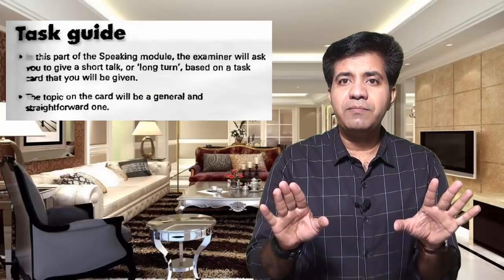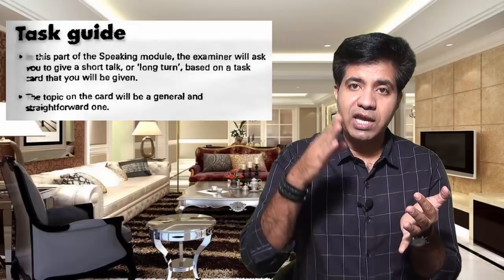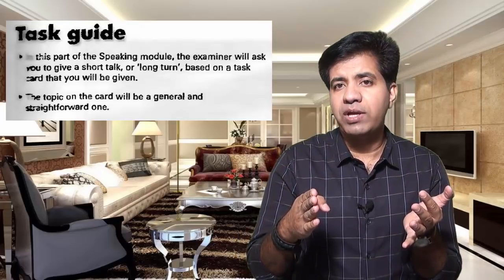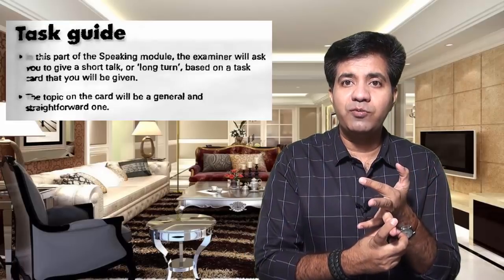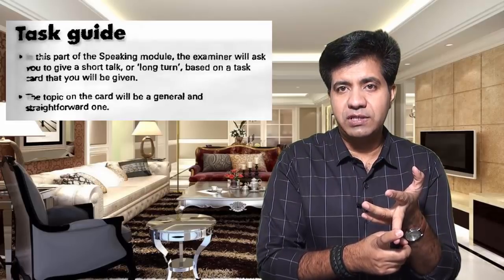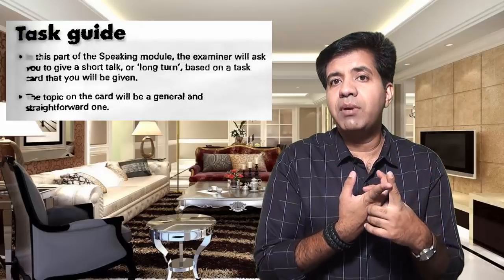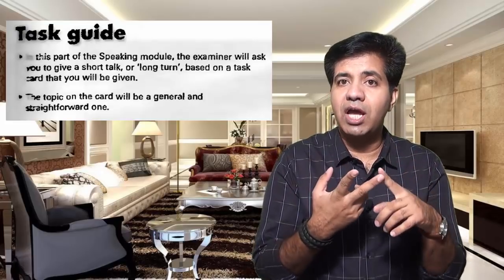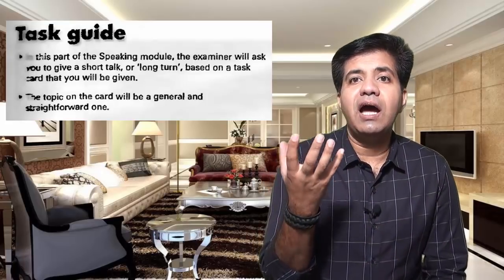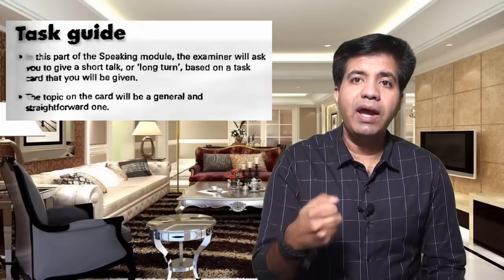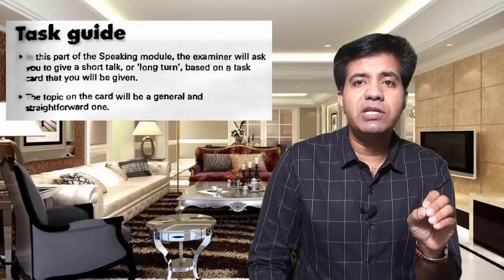For example: describe a person you like the most, with three or four sub-points using WH questions. Other examples include: describe a movie you once watched, describe a shopping mall you often visit, describe a person you meet every day, describe a book you once read. Speaking part two is basically a description — you have to describe something.